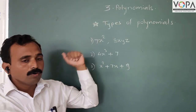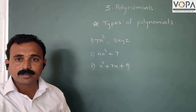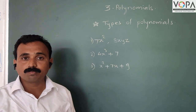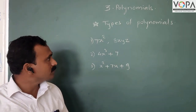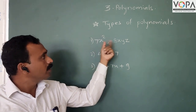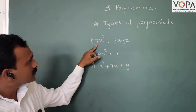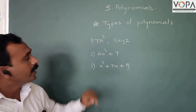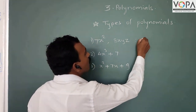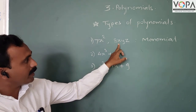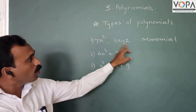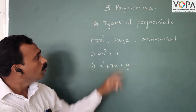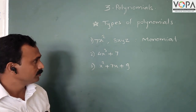Now we are taking the types of polynomials. Types of polynomials are based on the number of terms in the algebraic expression. The first example is 7x² and the second is 8xyz. In 7x², there is only one term, so it is called a monomial. In 8xyz, there are more than one variable, but they are all multiplied together, so 8xyz is also a monomial.